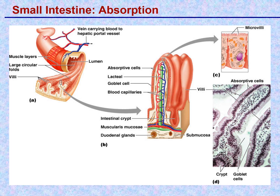The surface area is designed in a way that maximizes the area. There are large circular folds running around the inner circumference of the small intestine. On the surface of the mucosa, you have these finger-like projections called villi — that's plural; a single one is a villus. These villi, which form part of the mucosa, are completely covered with a simple columnar epithelium of cells.